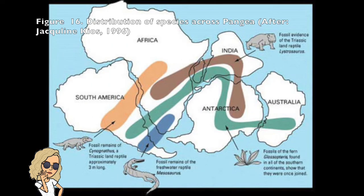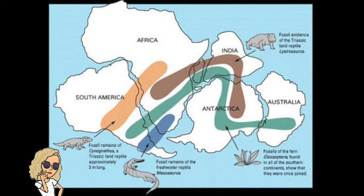Their distribution can also help support the theories behind continental drift and the splitting of Pangaea into Gondwana.